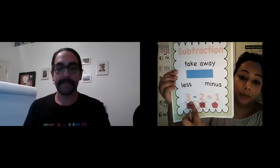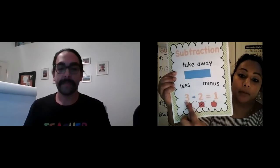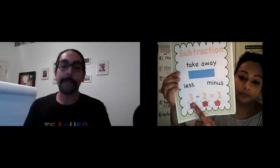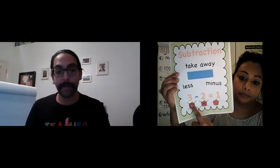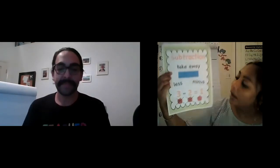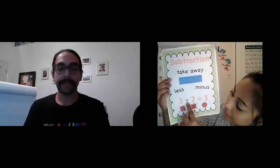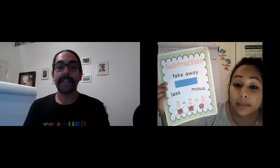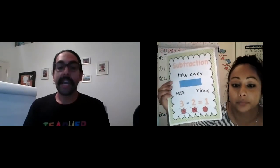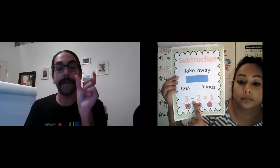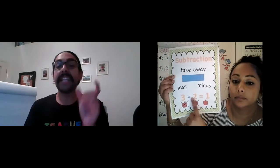We start with the greater number. We take away from that greater number to get a smaller number. Empezamos con el número más grande, le quitamos de ese número y nos deja con un número más chiquito. One thing we need to pay attention to is the sign in the middle — that's a minus sign. That tells me I'm going to subtract or take away. Tenemos que poner atención al signo que está en el problema. Eso significa que vas a restar, que tu número va a ser más chiquito.